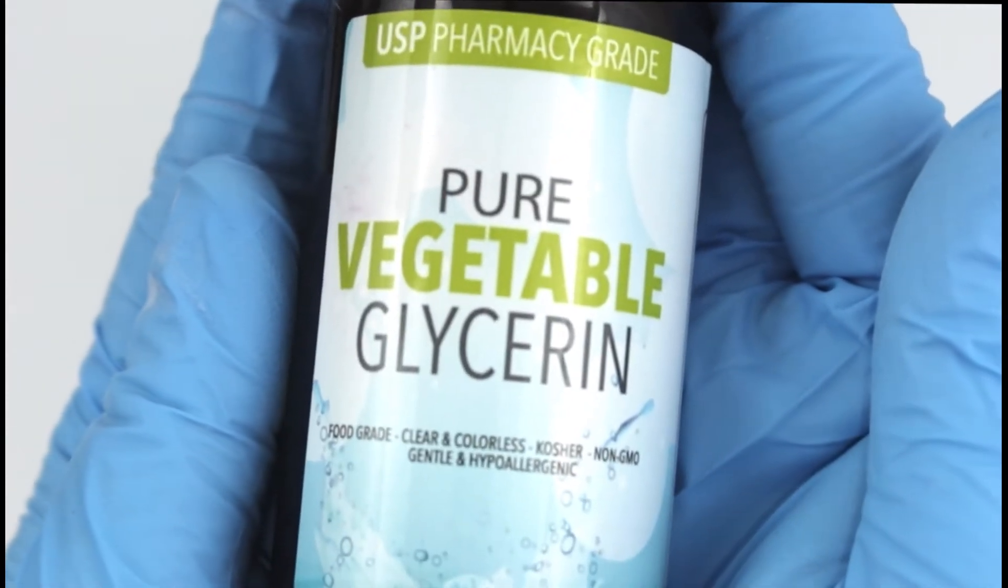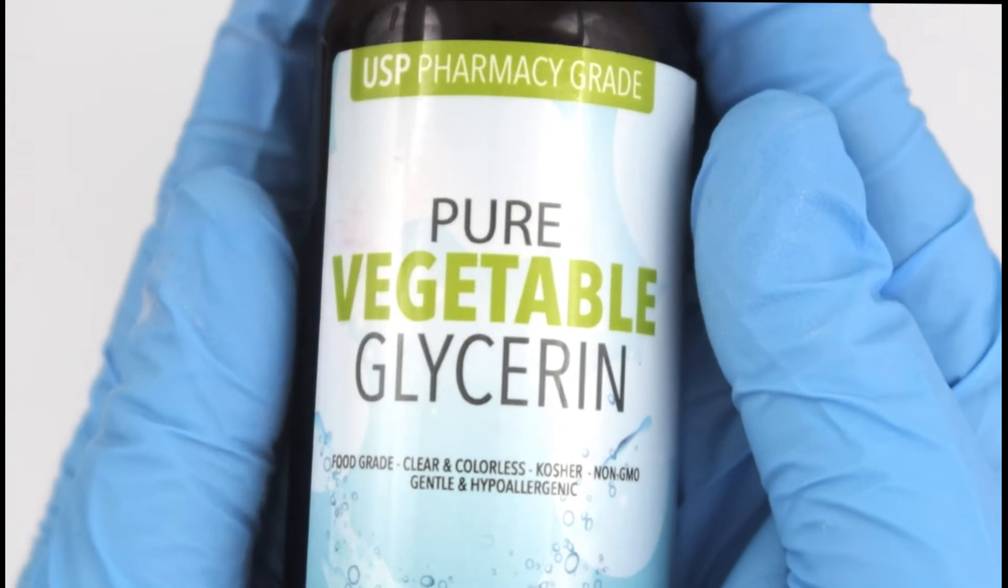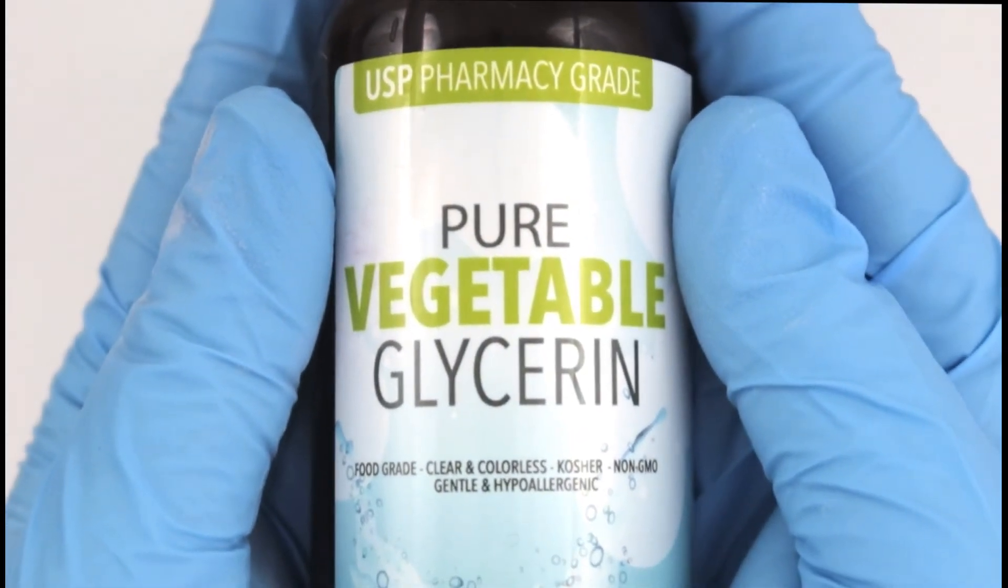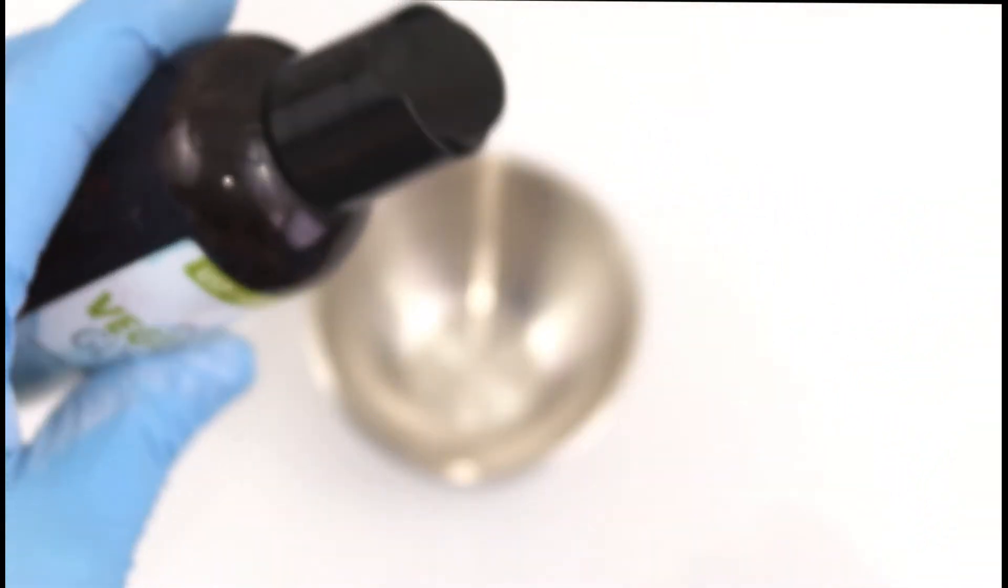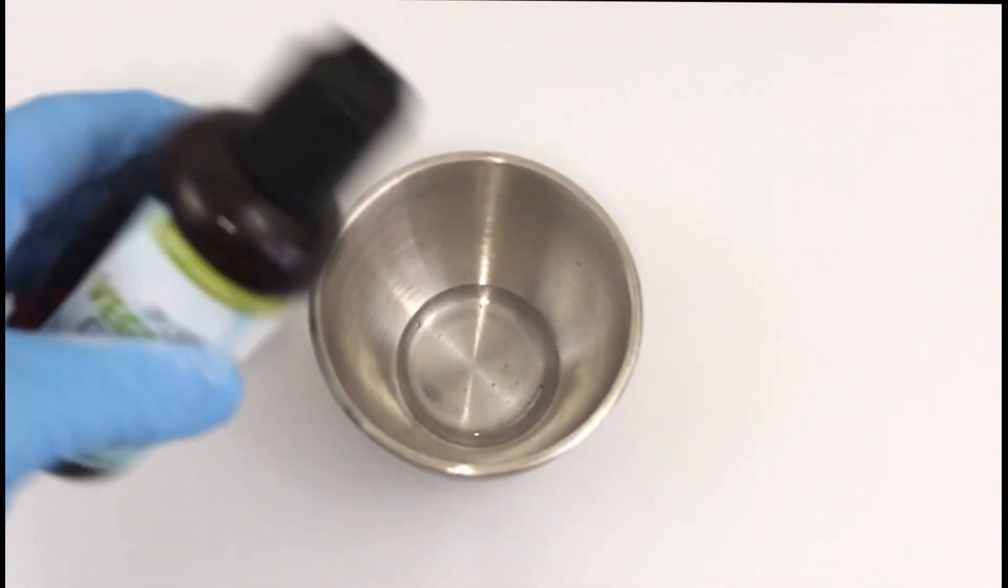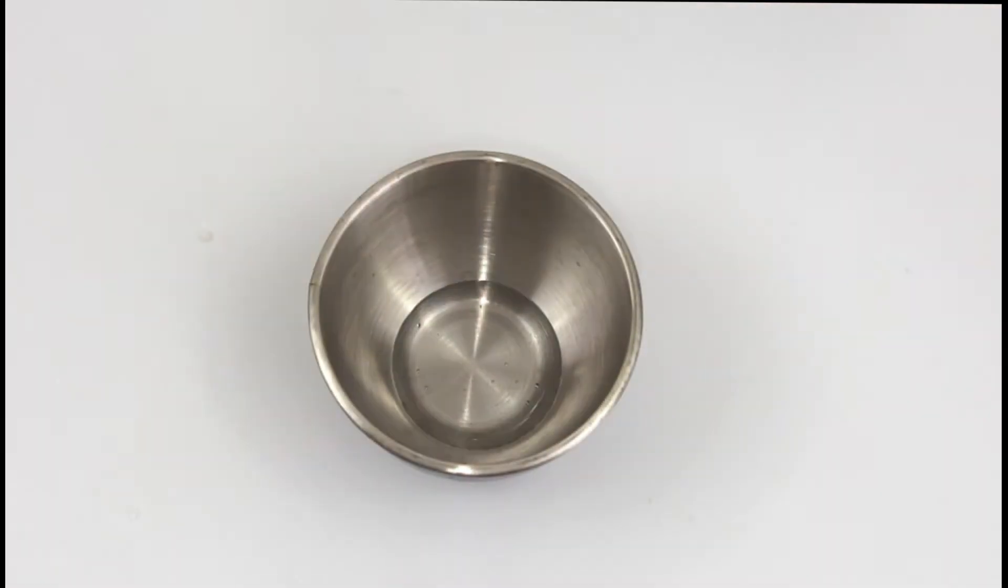Alright, so the coloring is actually very simple. We are just going to mix two ingredients, and they are vegetable glycerin with mica powder. So to achieve a toasted coconut coloring, I used a champagne-colored mica powder from Mad Micas, as well as a bronze mica powder from Mad Micas.